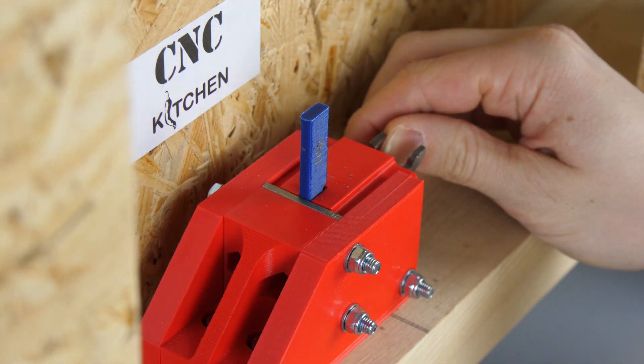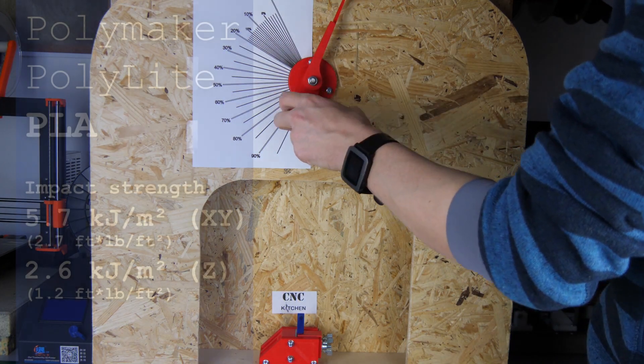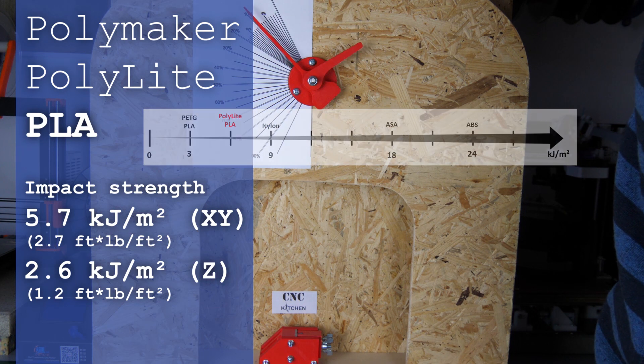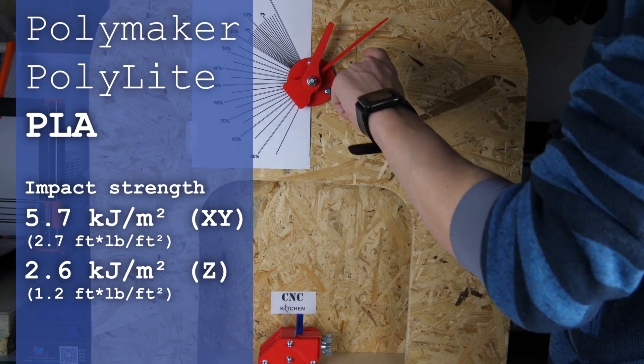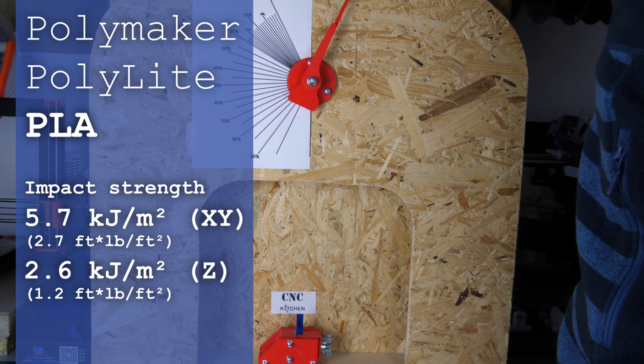Impact strength is, not surprisingly for PLA, quite low but still almost twice as high as on average. The specimens printed lying on the bed absorbed around 10% of the energy of the two joule impact hammer.